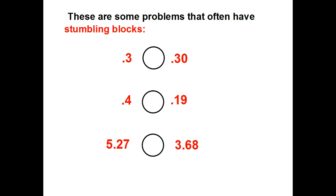The three problems you're looking at often have stumbling blocks. These are problems that can be a little tricky. So let's take a look at the first one. Here we have 3 tenths and here we have 3 tenths. Let's go back a digit. Here's a zero. Here's nothing. Remember what I told you yesterday that if you add a zero to the back of a decimal number, it doesn't change its value.